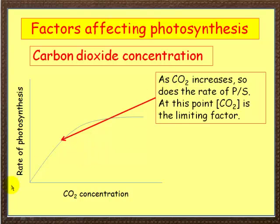Now carbon dioxide. Same sort of graph — along here you've got carbon dioxide concentration and up here, rate of photosynthesis. Look at the shape of the graph this time. Now at this point, carbon dioxide increases and so does the rate of photosynthesis. This symbol here means concentration of carbon dioxide — it's a shorthand way of writing down this long term, so rather than write down carbon dioxide concentration, I've put this symbol. Please don't get confused by it. Now at this point, carbon dioxide is the limiting factor.